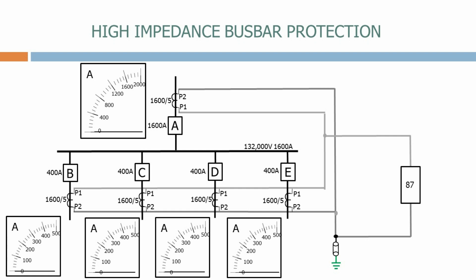Let's now close the circuit breakers. Current now flows through the incomer, through the busbar and onto the feeders. These primary currents are replicated on the CT secondaries.